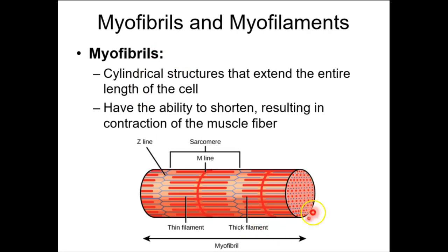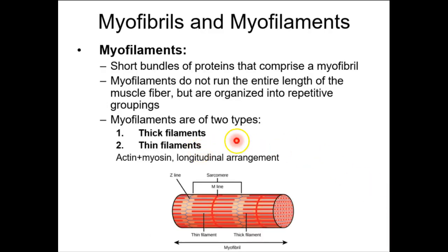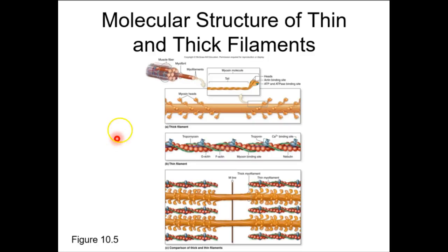Myofibrils are cylindrical and can be separated in two directions: you have the contractile unit known as the sarcomere, and these are made out of myofilaments derived from the cytoskeleton. Those myofilaments are categorized as thick and thin — or more specifically, myosin and actin. Myosin is thick; actin is thin. Each of these is a myofilament.